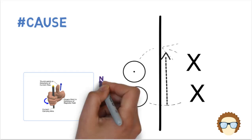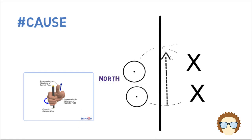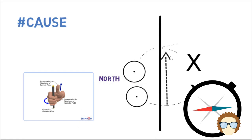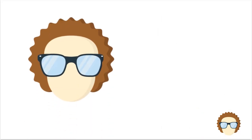According to right hand rule, the north pole will be on the left side, therefore the needle is turned toward left, therefore snow rule is proved.